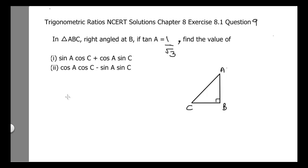This is CBSE and NCERT solutions chapter 8, trigonometric ratios, exercise 8.1, question number 9. The question is: in triangle ABC, right-angled at B, if tangent of A is 1 divided by square root of 3, find the value of two expressions. We have two parts and will do them one by one.